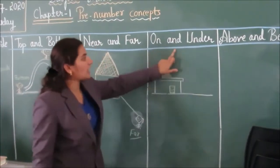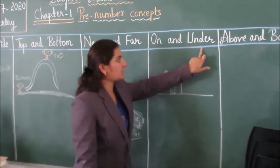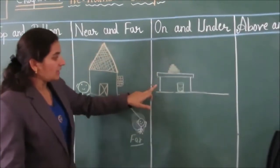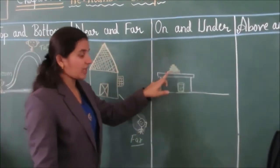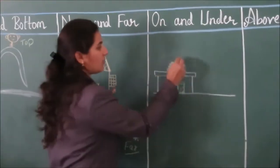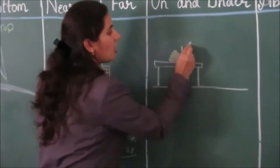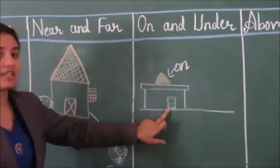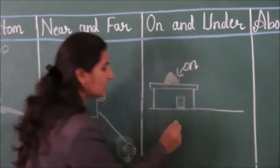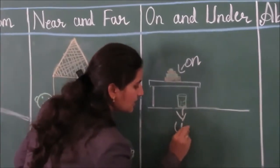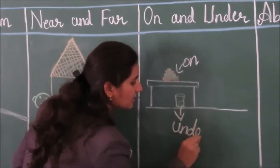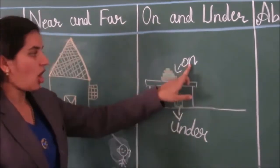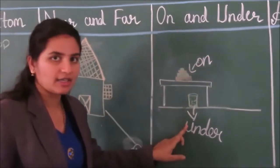The next concept is on and under. See children, the book is on the table. The book is on the table. The basket is under the table. On, under.